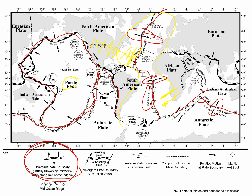Convergent plate boundaries are where plates come together — one plate dives under the other. The tabs on the map indicate the subducting plate. At the Aleutian Trench, the Pacific plate is diving under the North American/Eurasian plate. In another area, the Pacific plate dives underneath neighboring plates. In another location, the Indian-Australian plate is diving under the Pacific plate. The most dense plate always subducts.